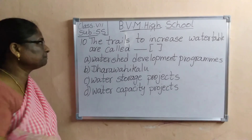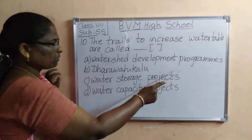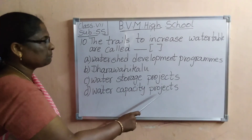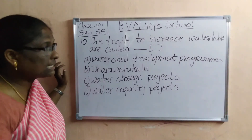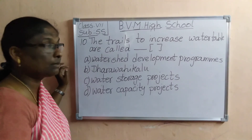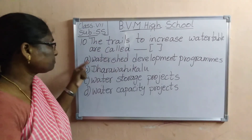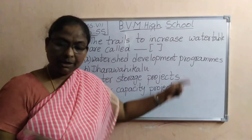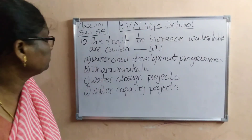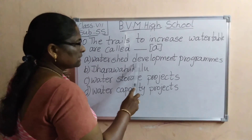Tenth one: the trails to increase water table are called dash. Options: Watershed Development Programs, Dara Vahikalu, Water Storage Projects, Water Capacity Projects. To increase water table means to raise the level of groundwater. The answer is Watershed Development Programs. I have completed all 10 blanks.